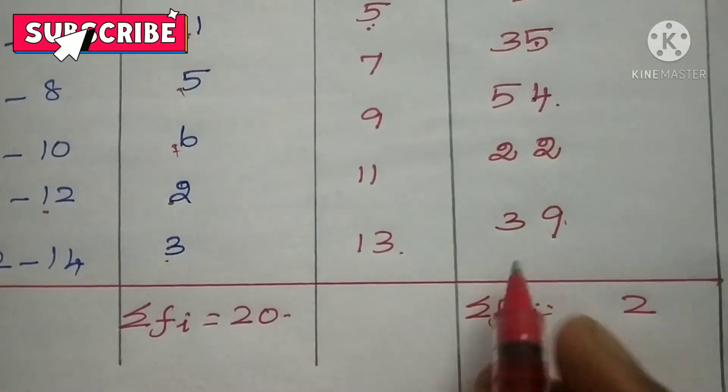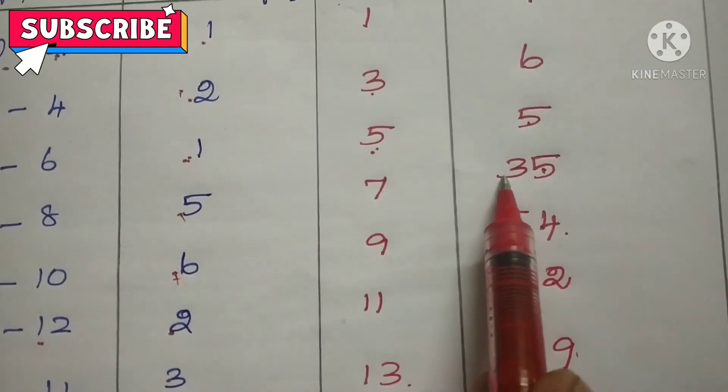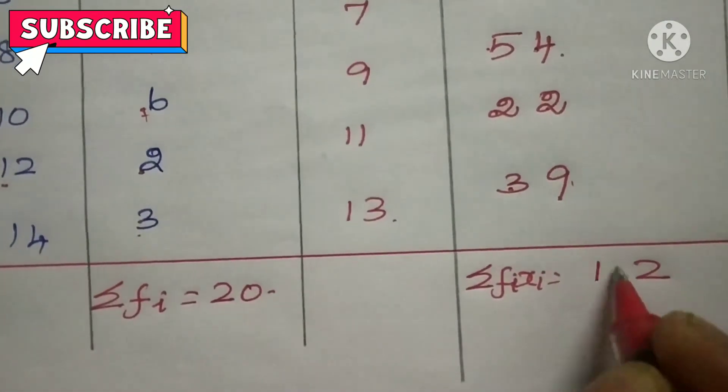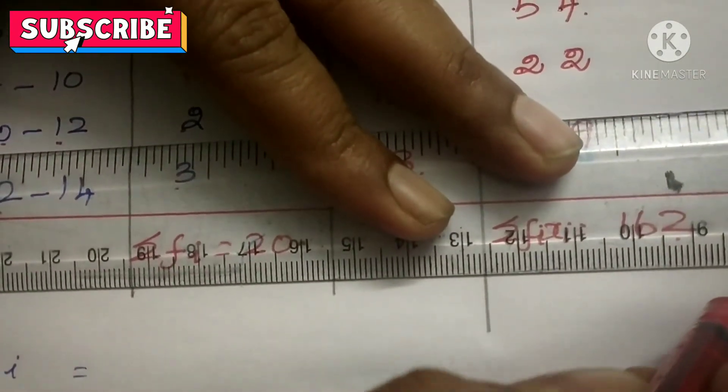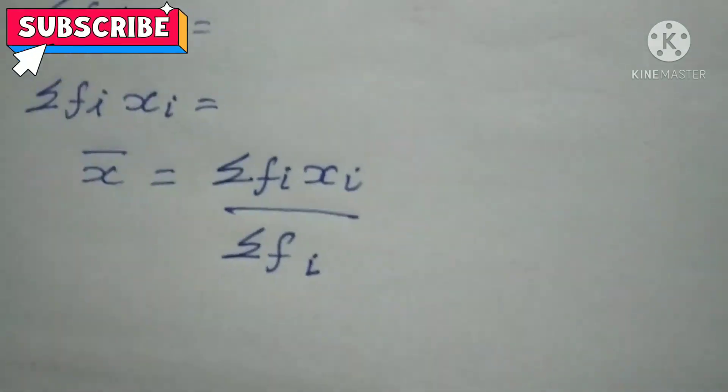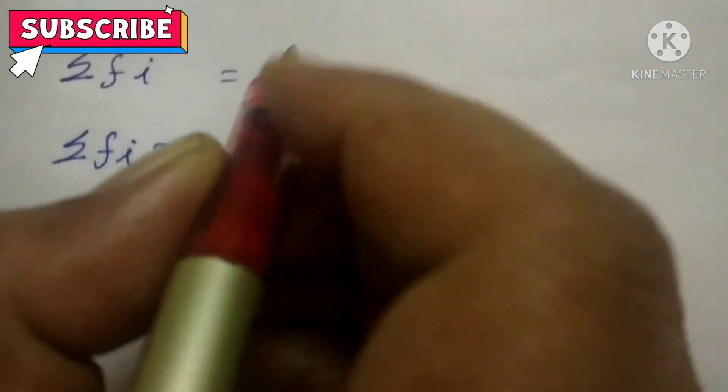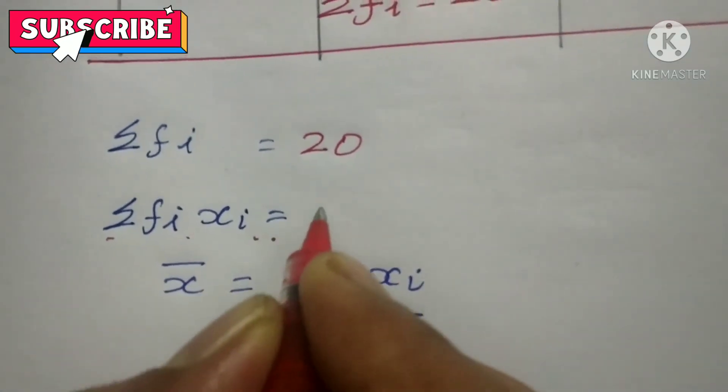25 is 31, 32. Then 3 plus 3 is 6. 6 plus 2 is 8. 8 plus 5 is 13. 13 plus 3 is 16. So draw neatly. The table must be very neat. Then sigma Fi Xi equals 162.